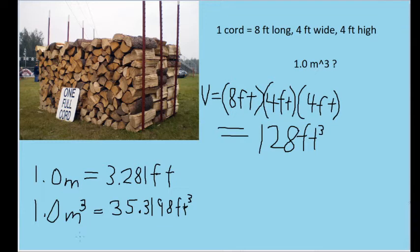Cubing both sides of this formula, the meter cubed, one cubed is still one. So that value doesn't change, but now we're dealing with a cubic unit here. Now we went from meters to meters cubed. And 3.281 cubed then becomes 35.3198 cubic feet.